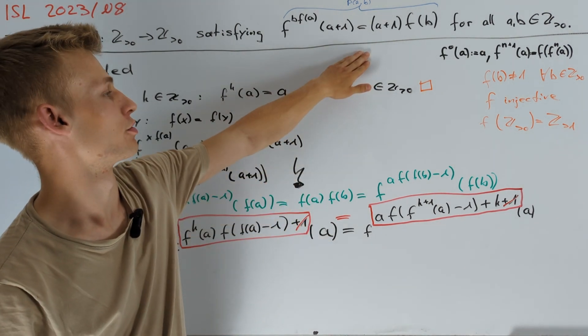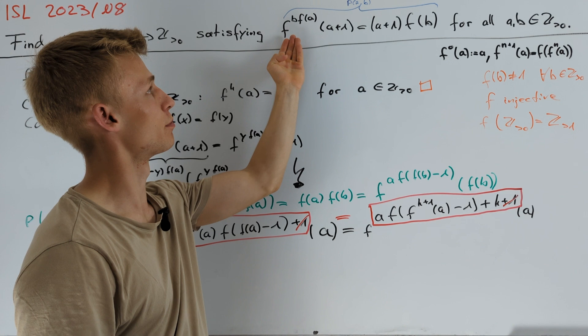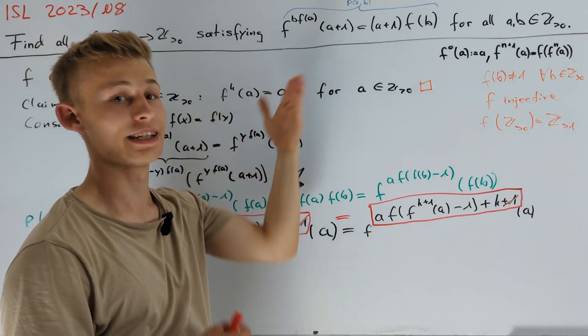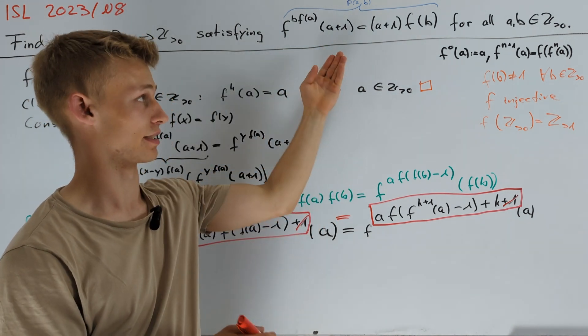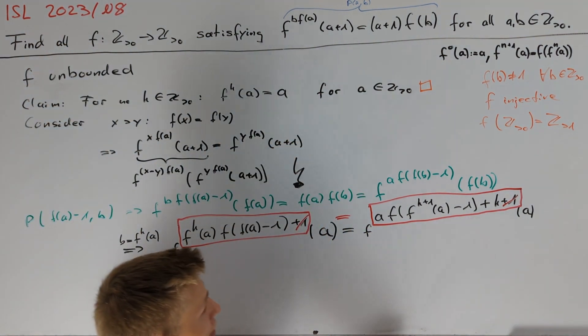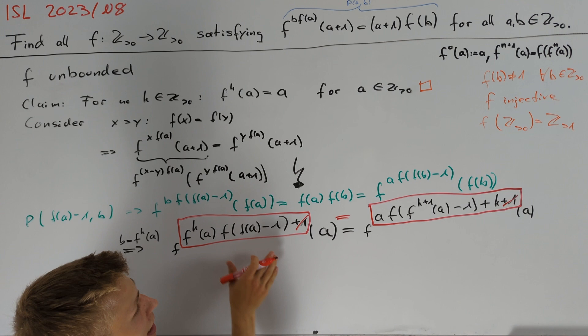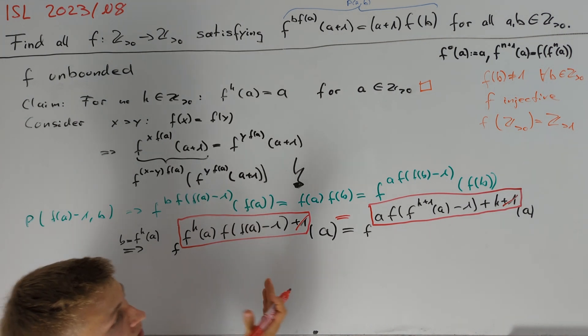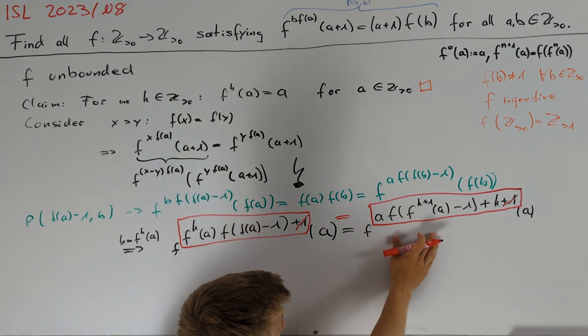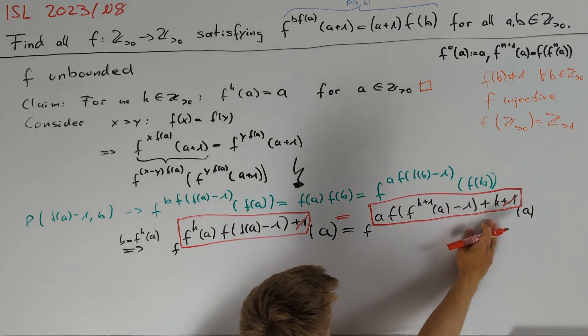To better understand what we should search for, let's take a look back to our original functional equation. We see that a+1 divides f^(something)(a+1). And therefore, we want to try to consider this case. Taking a look back at our red equation, we see that if a divides f^k(a), then the left hand side is divisible by a and the first summand on the right hand side is divisible by a. And therefore, we also get that k is divisible by a. So, let's write this down.